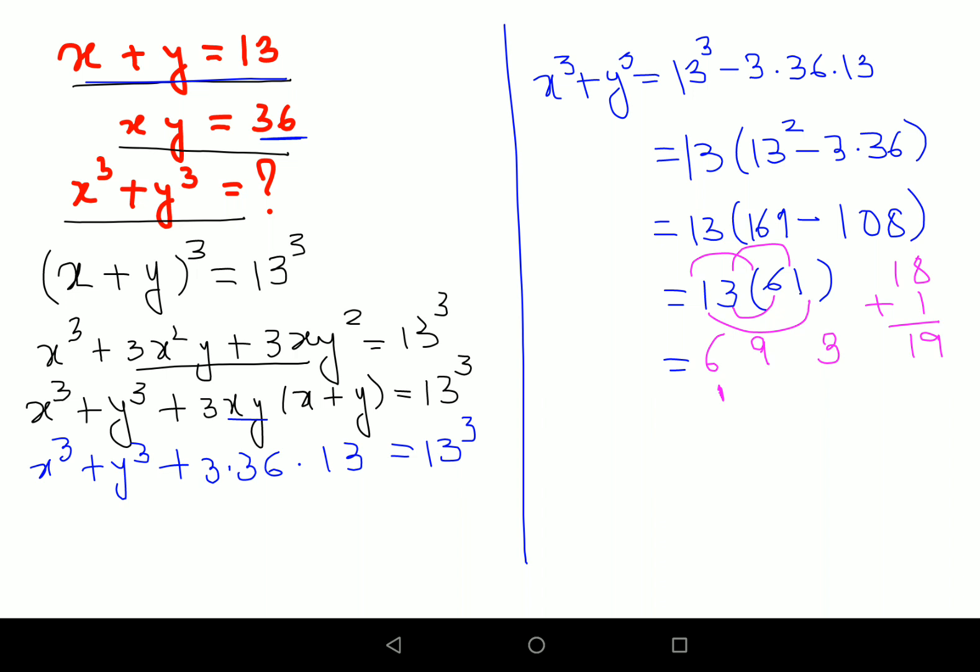So here what we'll do is we'll write 1 here and 9 will come at the middle digits place and this one gets carried forward. So final answer is 793. That my dear friends is the final answer of x cube plus y cube.